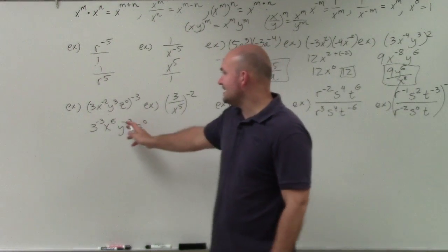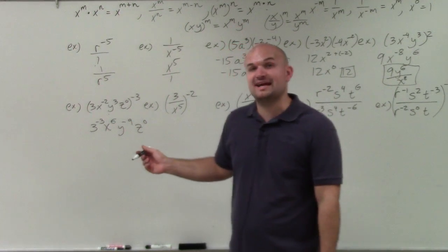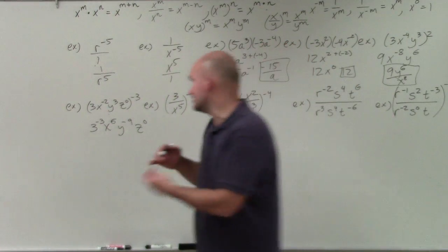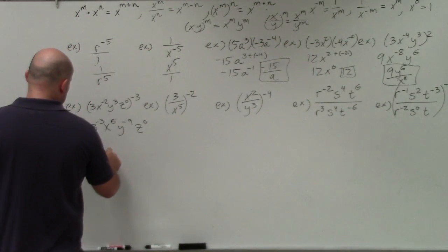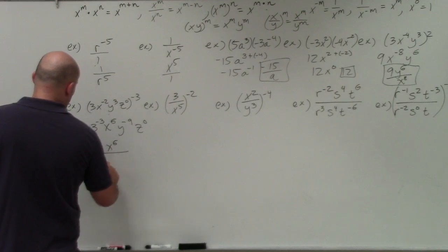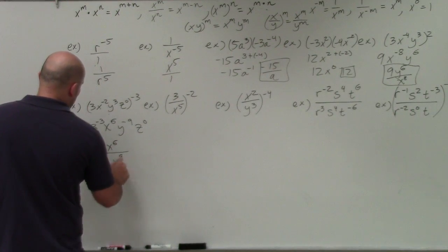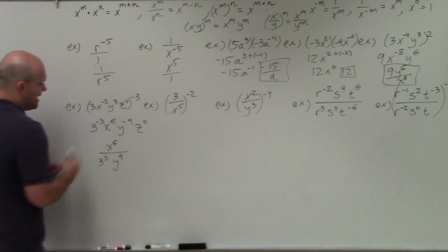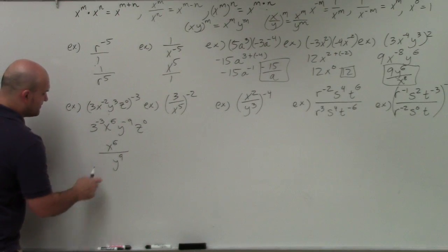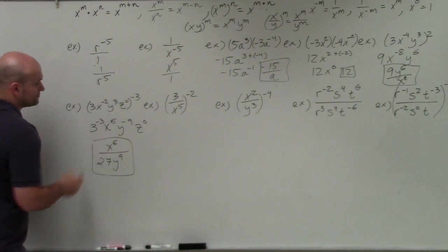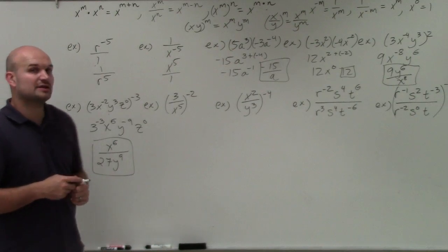Now, whenever we have a negative power, we need to rewrite those using the reciprocal. Z to the 0 is just 1, so I'm left with x to the 6th over 3 cubed y to the 9th. Obviously 3 cubed equals 27, but since it was negative, that's why it ends up in the denominator. And there you go.